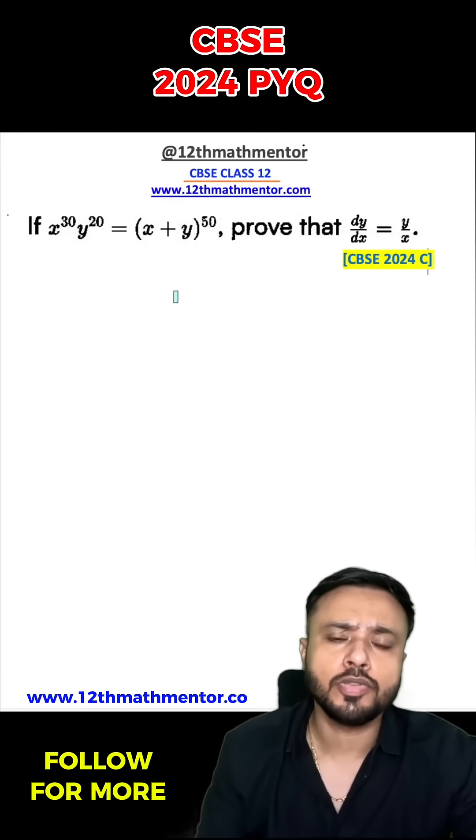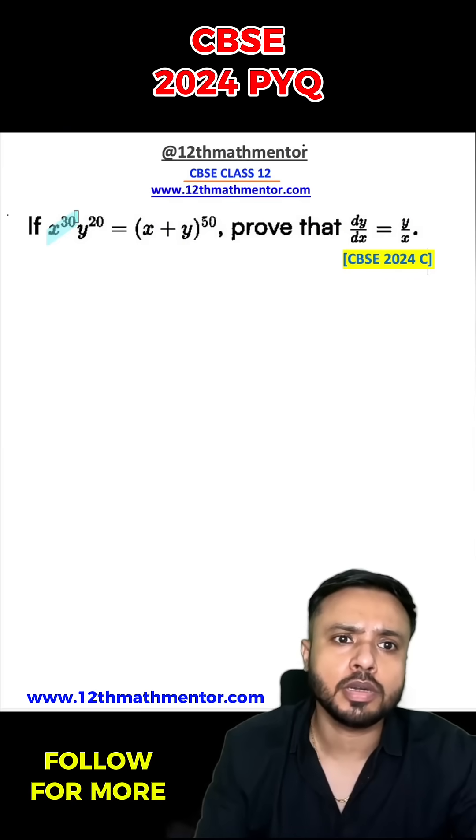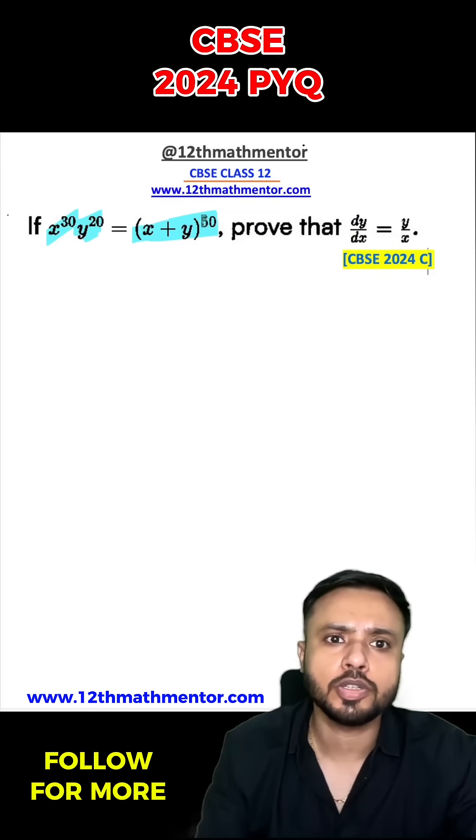Derivatives is a super tricky question. CBSE 2024 class 12 has math book compartmental exam. In this question, it's given that if x raised to the power 30 into y raised to the power 20 is x plus y raised to the power of 50, then we have to prove that dy upon dx is y upon x.